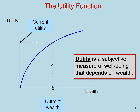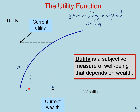One important feature of this utility function worth mentioning is diminishing marginal utility. Suppose your utility level is currently at some point, and we increase wealth by a certain monetary amount — that is associated with an increase of utility of U1 units. If, on the other hand, we have a wealth level that is much higher and increase that wealth by exactly the same monetary amount,